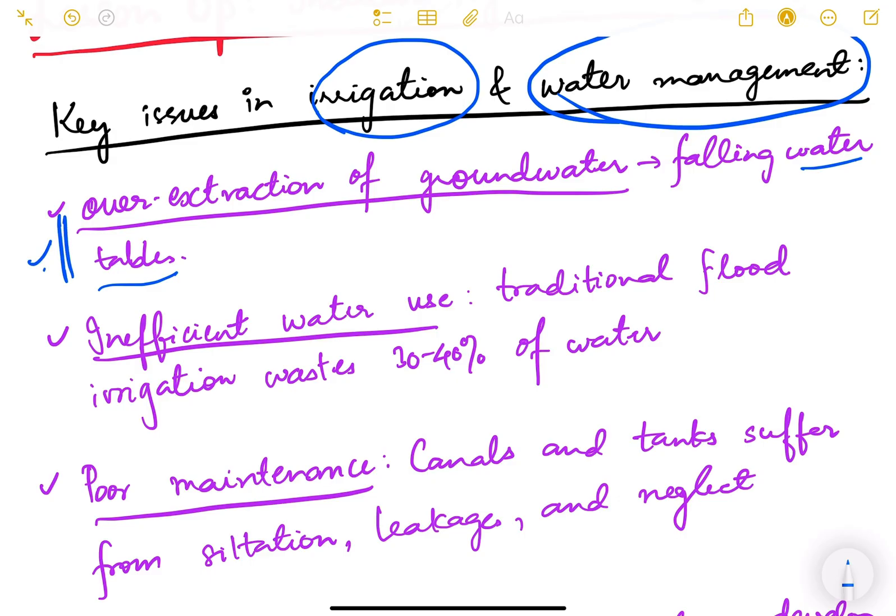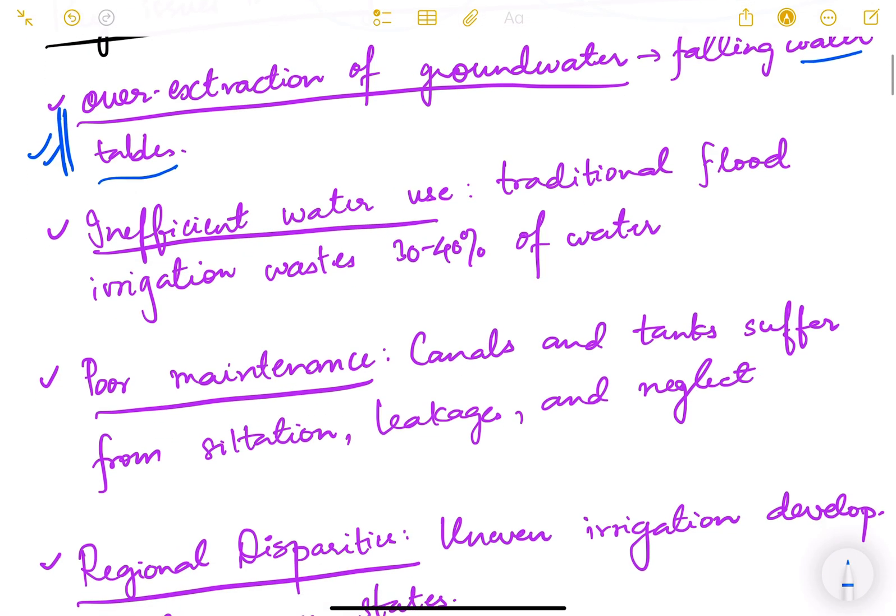The next one is inefficient water use. Whatever water we are extracting from the ground or using from the dams, canals, rivers, etc., the water is not being used efficiently. The water use efficiency is low.